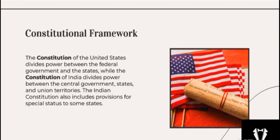The State List contains subjects of state and local importance such as police, trade, commerce, and agriculture — the state government alone can make laws on these matters. The Concurrent List includes topics of common interest to both the centre and the state government, such as education, forest, marriage, and trade unions, and both the state and central government can make decisions on these matters.